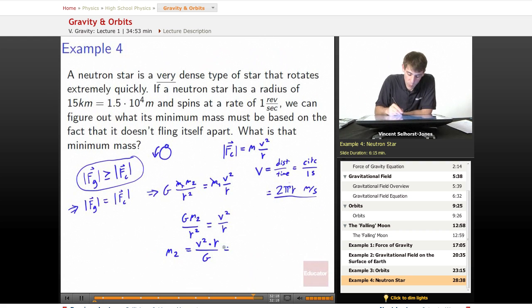We sub that in, and we get 2 pi r squared times r over G, or 4 pi squared times the distance to the surface cubed divided by G.